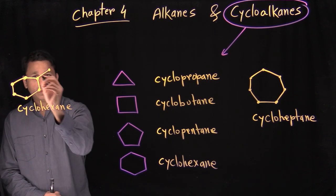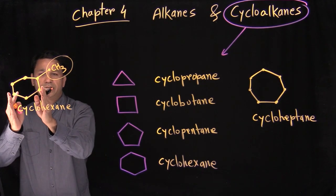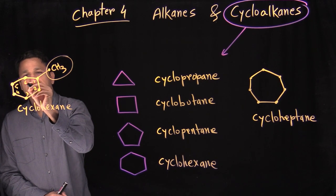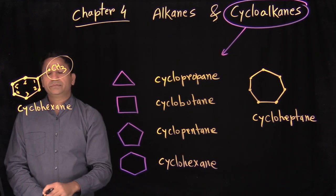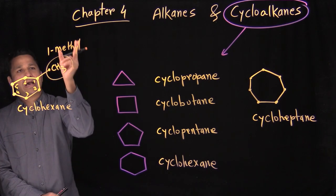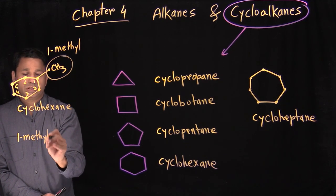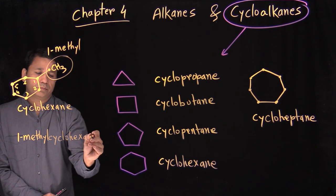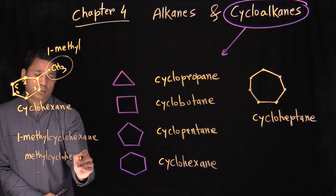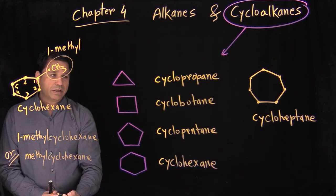So you start numbering the ring. The branch should get the lowest possible number — that's carbon one. Going around: one, two, three, four, five, six. The branch is one methyl group, so together that gives you 1-methylcyclohexane. Since we only have one branch, you can just write methylcyclohexane.